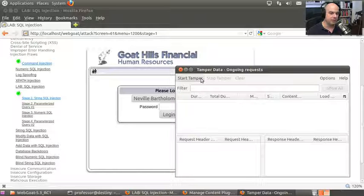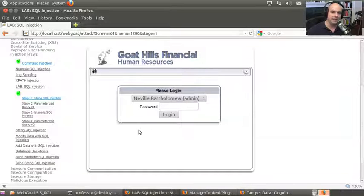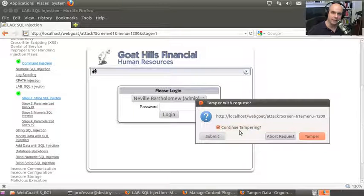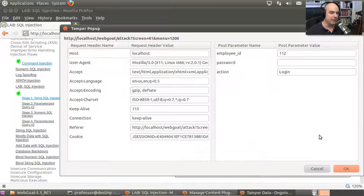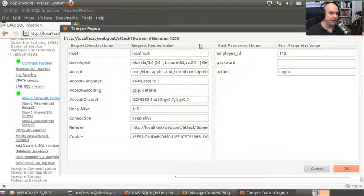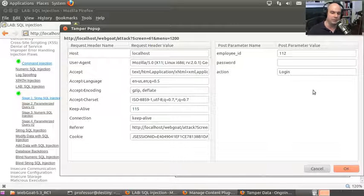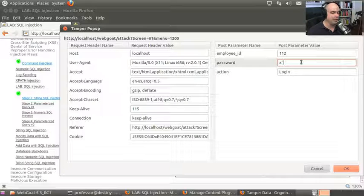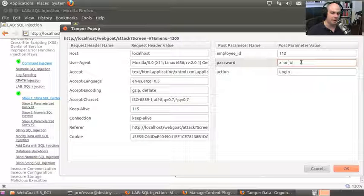I'm going to turn on the tampering, start the tamper, which means any time I send information to a web server, it's going to ask if I want to change it. I'm not even going to type in a password for Neville. I'm just going to hit log on. Tamper says, would you like to continue tampering? Absolutely yes, I would. Because as part of this information in the header and parameters that are sent to the web server, in the password field, I'm going to perform some SQL injection. I'm going to type in some SQL code here that is going to get around the very bad programming that is on this particular computer.